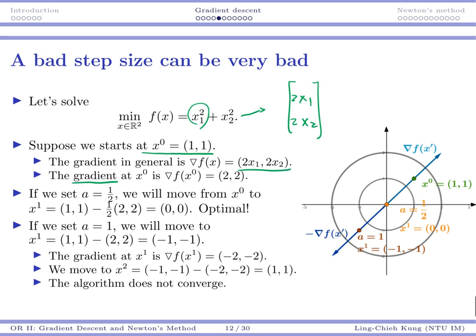So we will move in the opposite direction. In that case, if we choose a to be 1/2, we're going to move from x0 to x1, which is (0,0). This would be optimal. So if we move in this way and choose the right step size, then we would get to an optimal solution.